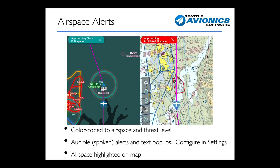In addition to the text pop-ups, we've also added for the first time audible — that is to say, spoken alerts. So for example, as you're approaching class D airspace, FlyQ quite literally says 'approaching class D airspace.' You can configure, by the way, if you want audible warnings, text-based warnings, or both in settings.